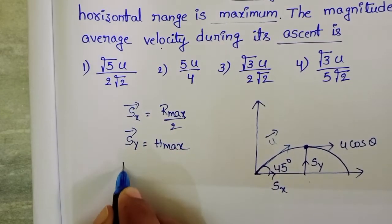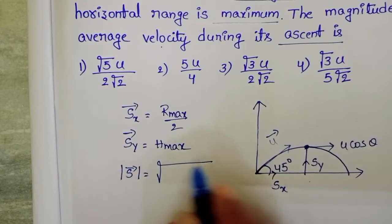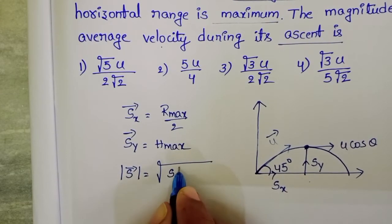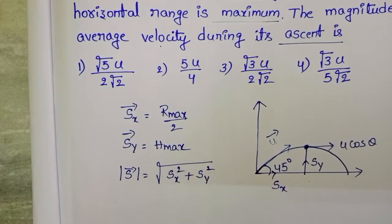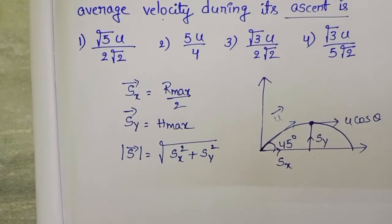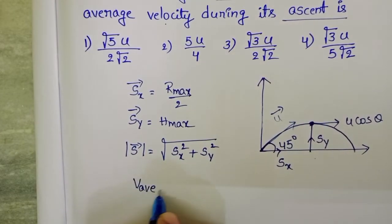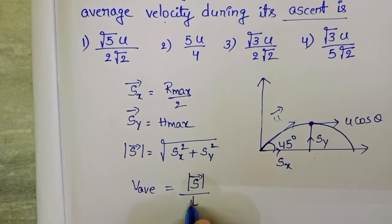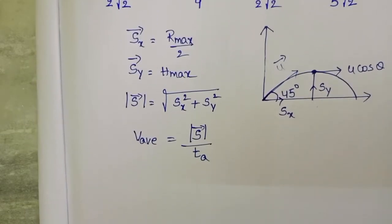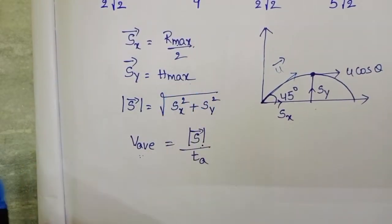The magnitude of the resultant displacement equals the square root of the square of the horizontal displacement plus the square of the vertical displacement. The magnitude of average velocity equals the magnitude of displacement divided by the time of ascent. We need to find R_maximum and H_maximum.